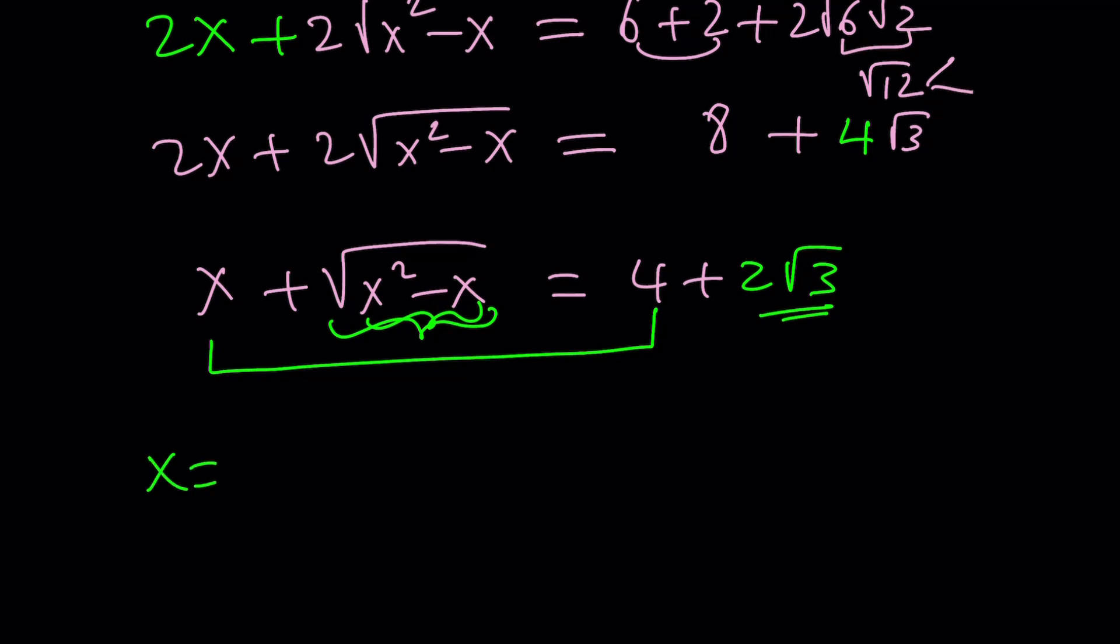If x is equal to 4, we get the square root of 4 squared minus 4, which is the square root of 16 minus 4, which is 12. And that's actually equal to 2 root 3. So that was the right assumption right on there.